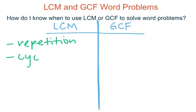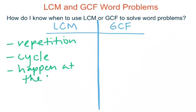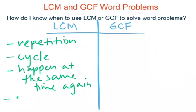Another thing to look for is if something is cycling, which is very similar to repetition. We also want to see if the problem mentions two or more things happening at the same time. And then some obvious language: when we think of least common multiple, looking for the word 'smallest' or 'least' would be key indicators that you're using LCM to solve the word problem.